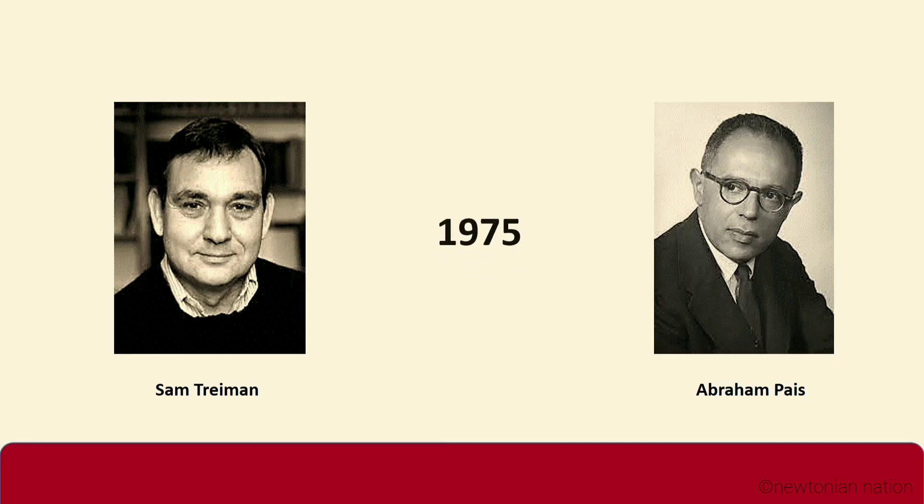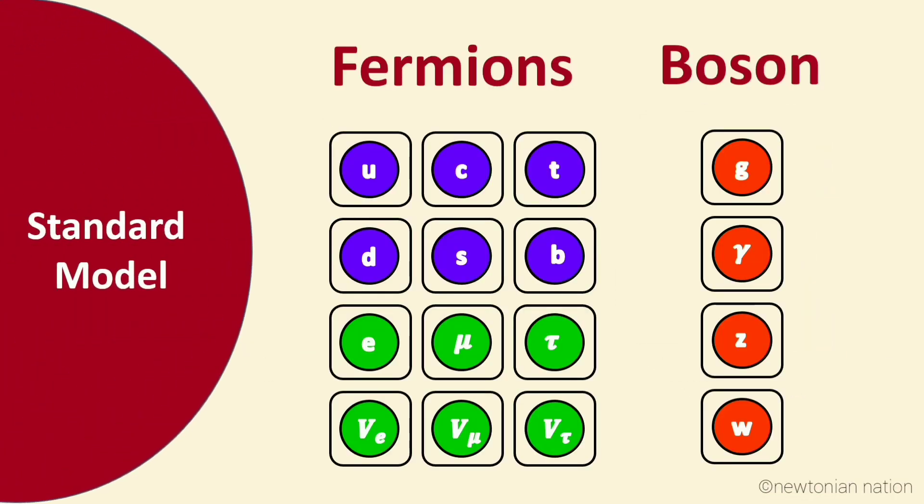The term Standard Model was first coined by Abraham Pais and Sam Treiman in 1975. At first, the Standard Model has two categories based on spin. The first one is fermions, which have half-integer spin, and the next one is bosons, which have integer spin.